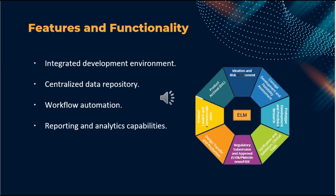Let's take a closer look at the features and functionality offered by IBM ELM. IBM ELM provides a unified platform that integrates various tools and data, enabling collaboration and seamless information flow across teams. All project artifacts such as requirements, design, test cases, and defects are stored in a centralized repository, enabling easy access, version control, and traceability. It automates and enforces defined processes, reducing errors and ensuring consistency. It also provides built-in reporting and analytics features that give insight into project status, progress, and quality metrics, enabling data-driven decision-making.